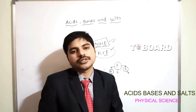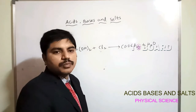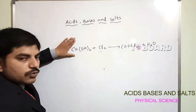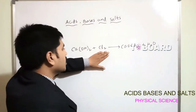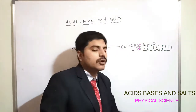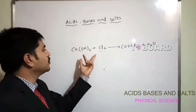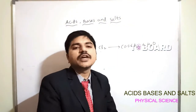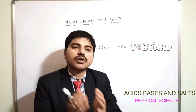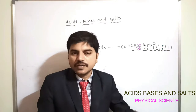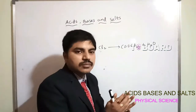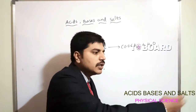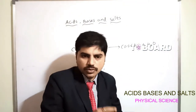Bleaching powder preparation: lime water (Ca(OH)₂) mixed with chlorine gives calcium hypochlorite (CaOCl₂) and water. Calcium hypochlorite is called bleaching powder. It is used in cotton and textile industries, as a detergent, to kill germs, and to clean areas.